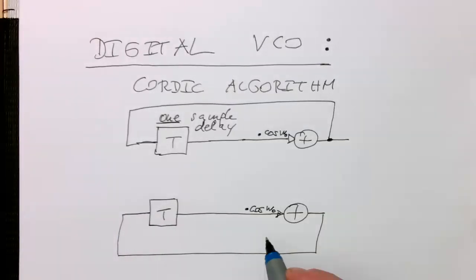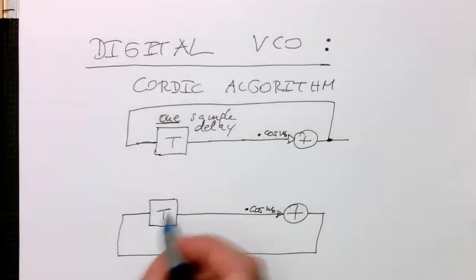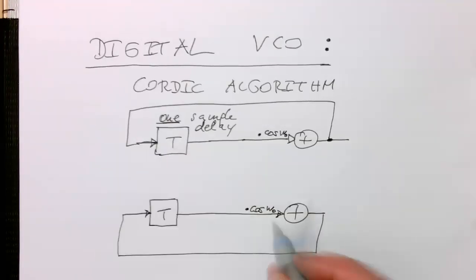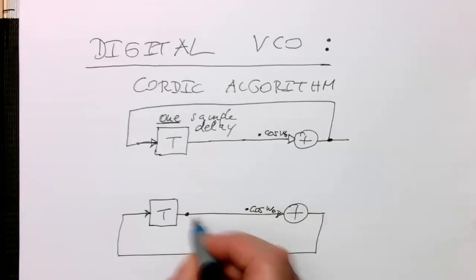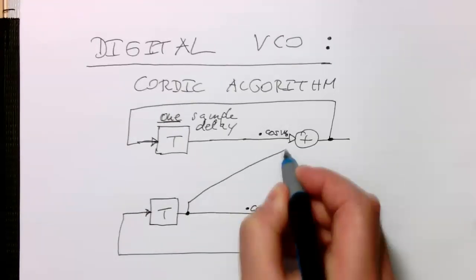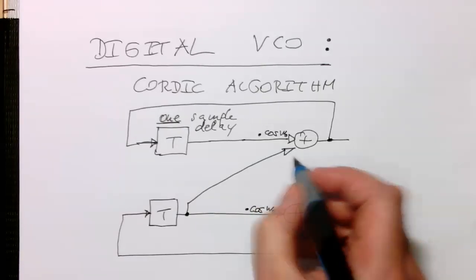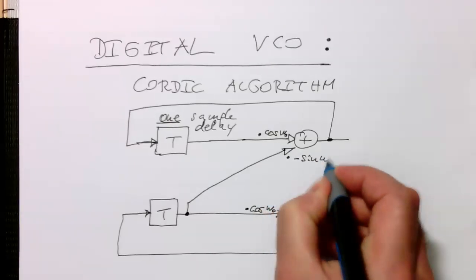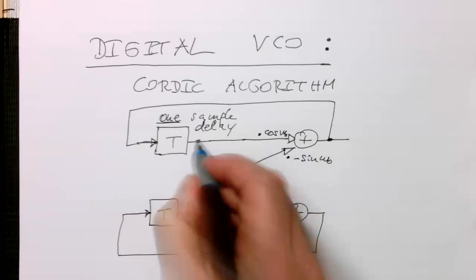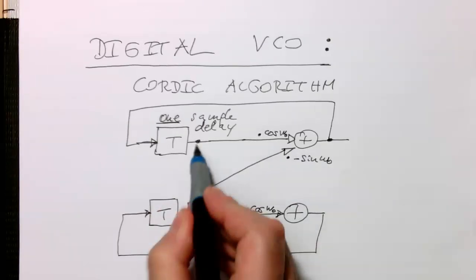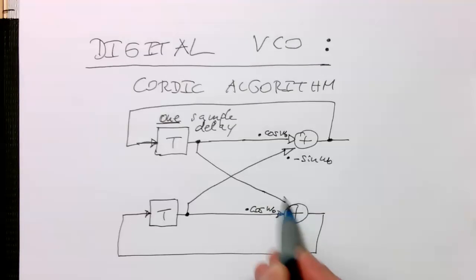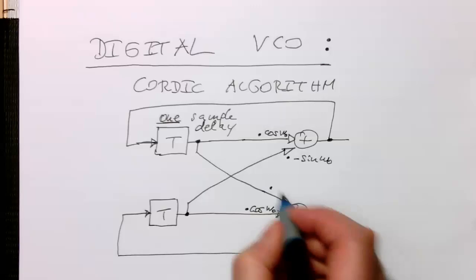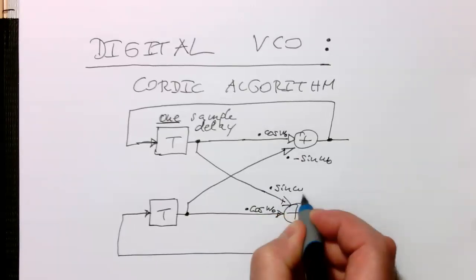So now we've got here two recursive processes. Now we link these two processes together by sending this signal over here and multiplying this with minus sine omega zero. And we send this signal over there and into this summation unit here. And we multiply this here with sine omega zero.